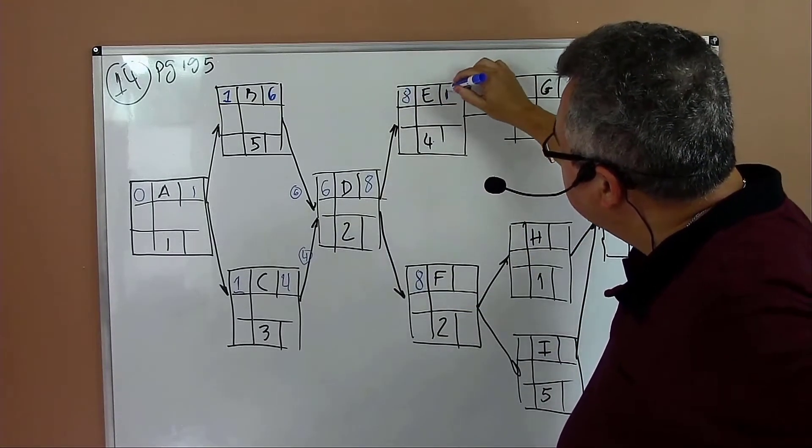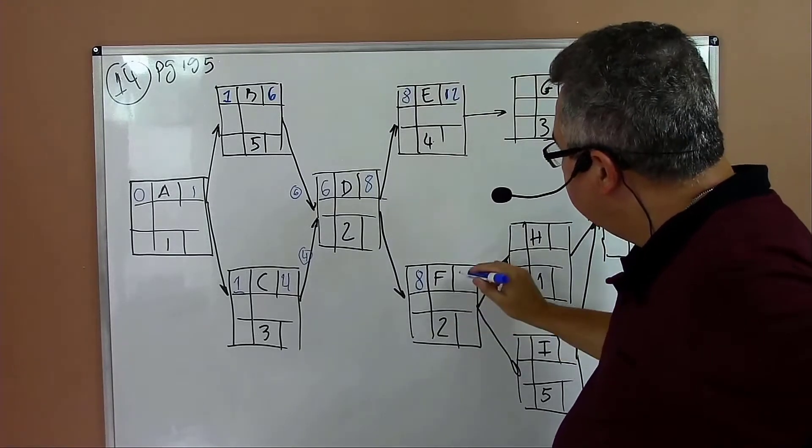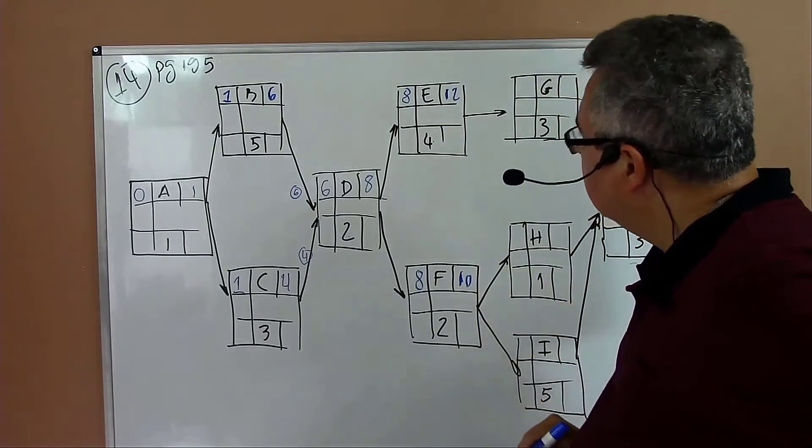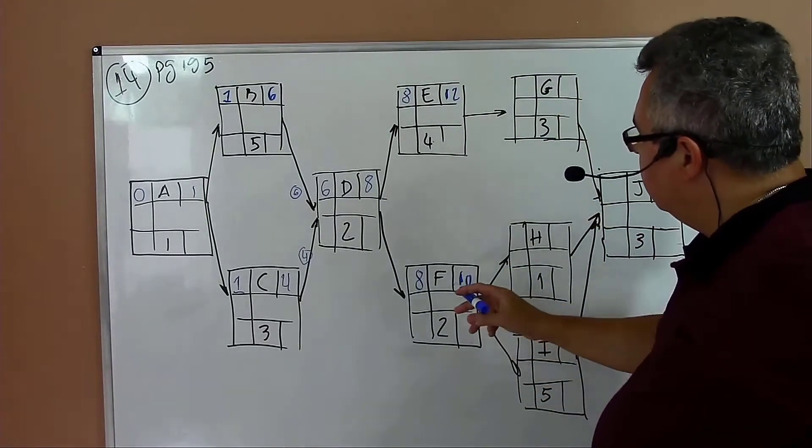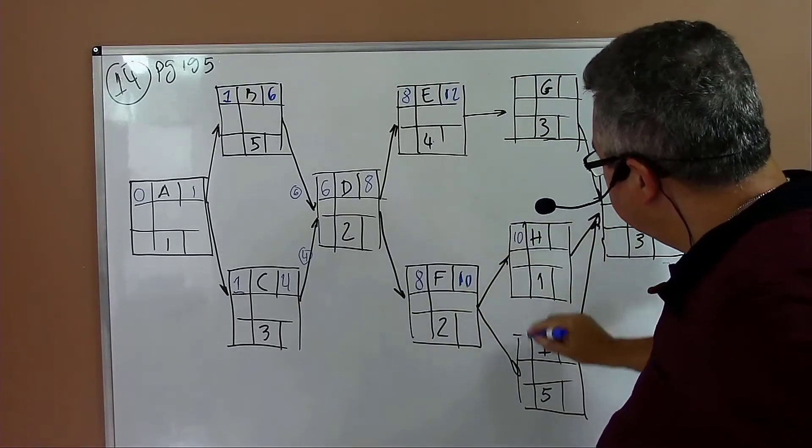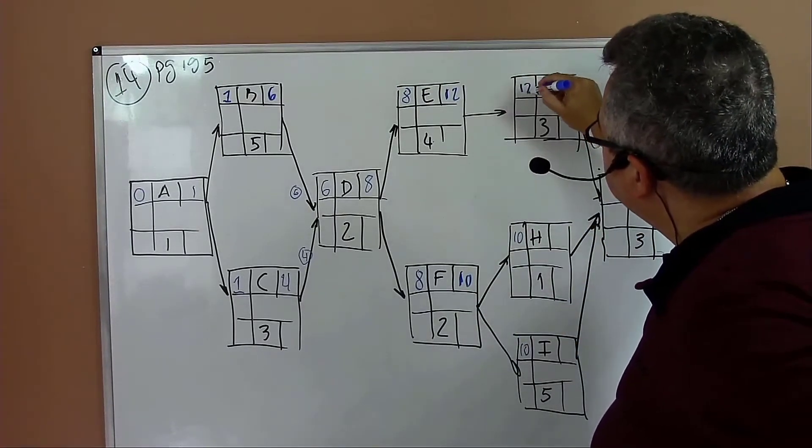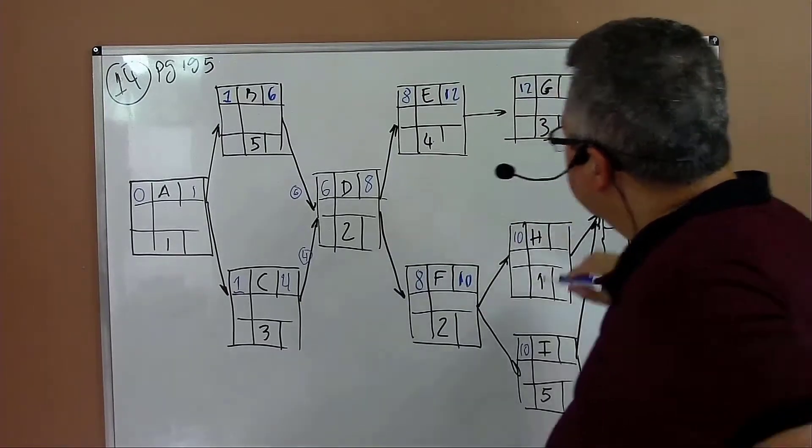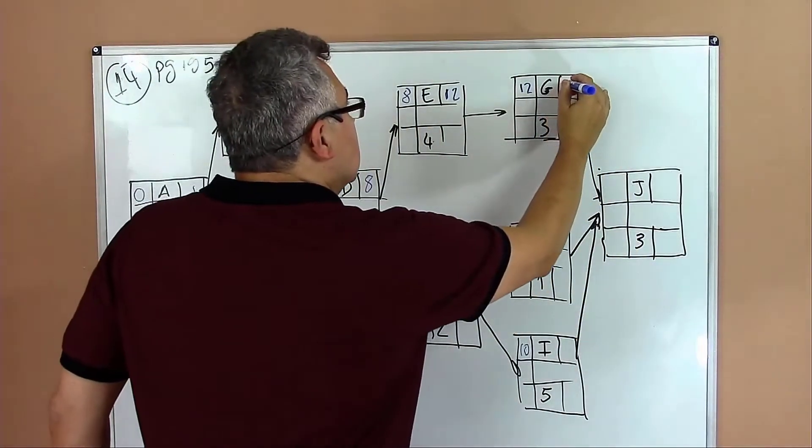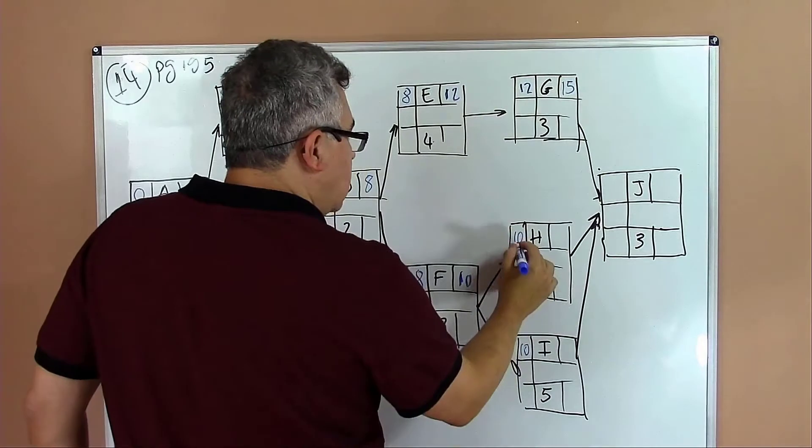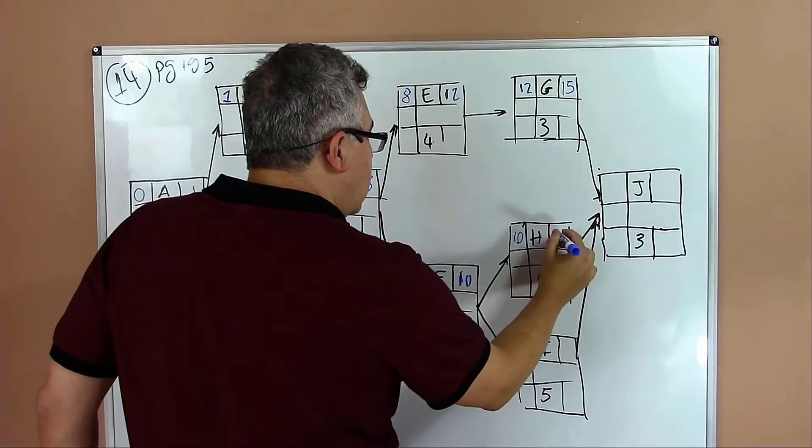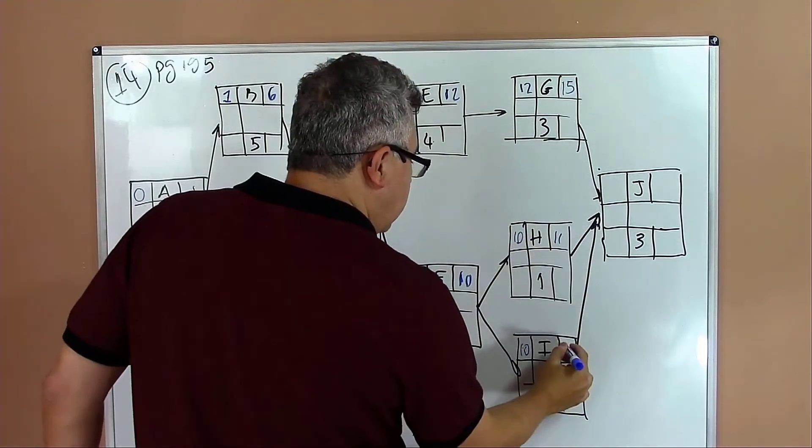Now we move eight to the next activities. You have eight plus four equals twelve. Eight plus two equals ten. Then we move ten for activities F and H, and we're moving twelve to activity G.